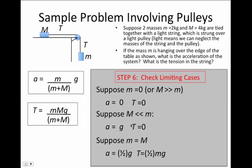Perhaps a third, not as intuitive, is if we set the two masses equal to one another. If one does that, then we find that the acceleration is half of g and the tension is half times mg.